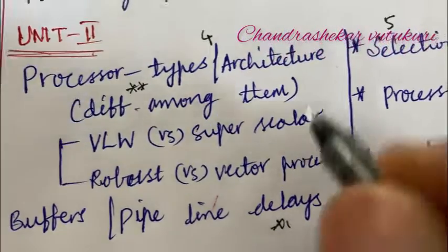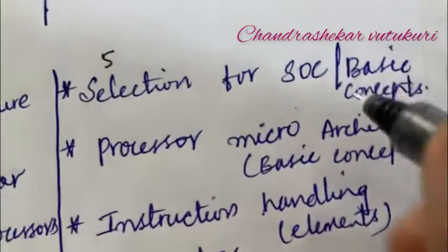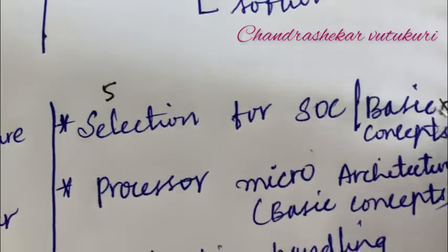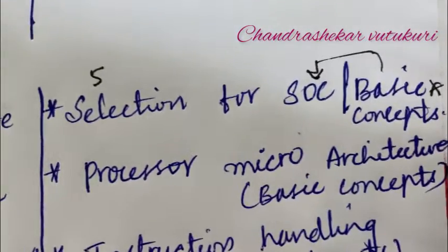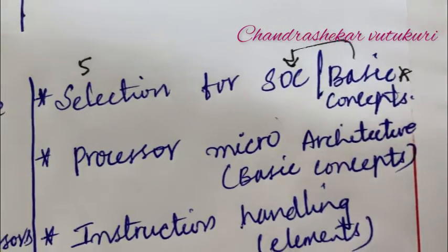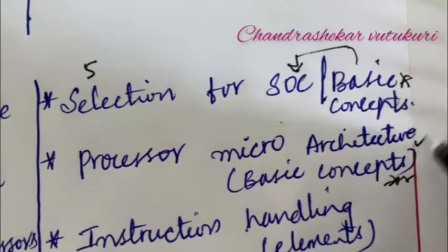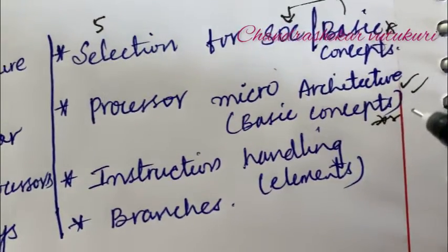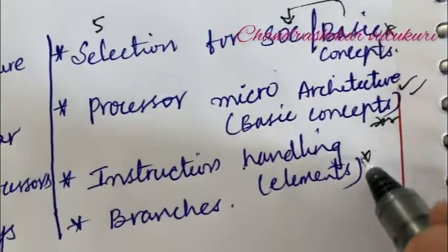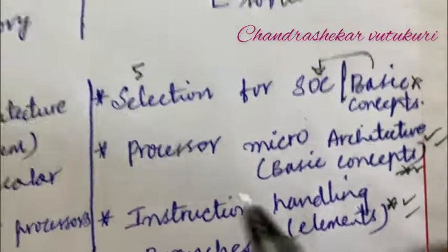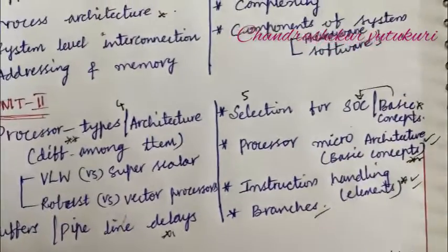Pipeline delays is said to be the topmost question which may occur in 4A or 4B. The selection of SoC and the basic concepts of SoC and processor micro architecture along with basic concepts is the topmost question. Instruction handling along with its elements is also one of the very important questions. The branches may be a short question. This may be part of the second unit, question number 4 and 5.